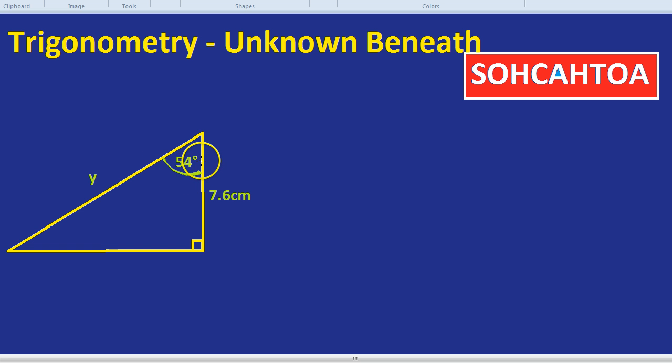We can kind of tell that we're going to need trigonometry because we have a right angle triangle and we have an angle involved. So it's not going to be Pythagoras.